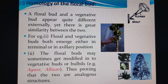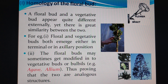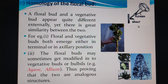Now, there are several evidences that were given. The first evidence is the homology of the flower bud. Here you can see certain examples. The homology means that the floral and the vegetative buds both emerge either at the terminal position or at the axillary position. So the positioning of both the vegetative bud and floral buds is the same — this is one homology.